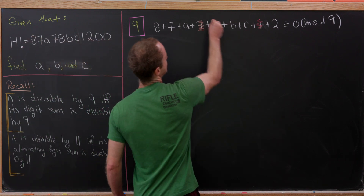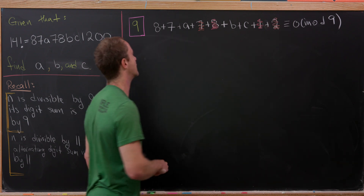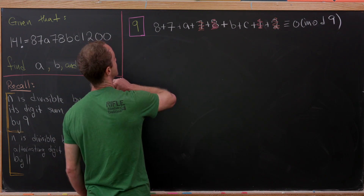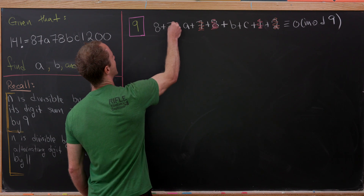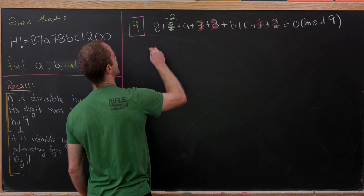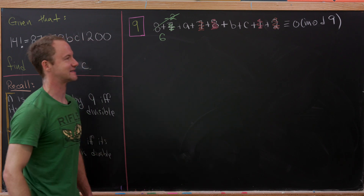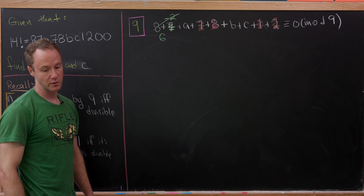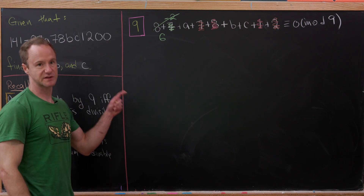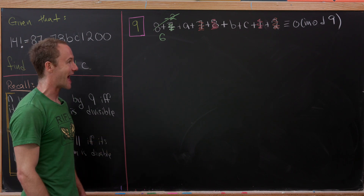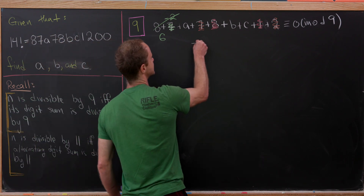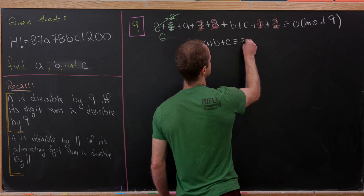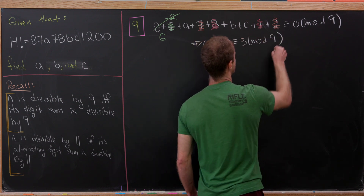Then 7 + 2 is also 9, so we can disregard those as well. We're simply left with 8 + 7. Now I'm going to view this 7 as negative 2 mod 9, which allows me to look at the whole thing as 6 mod 9. Moving it to the other side of the congruence gives us 3, because subtracting by 6 is the same as adding 3 mod 9. So we get A + B + C ≡ 3 (mod 9).